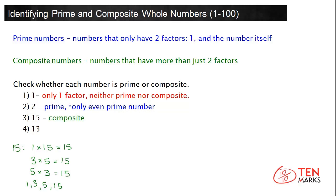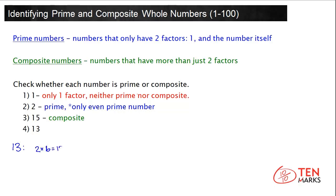Now let's take a look at the last number, 13. Let's look for 13's factors. What numbers can we multiply by something to get 13? Let's try 2: 2 times 6 equals 12, and 2 times 7 equals 14. 2 can't be multiplied by something to get 13, so 2 is not a factor of 13. Let's try 3.